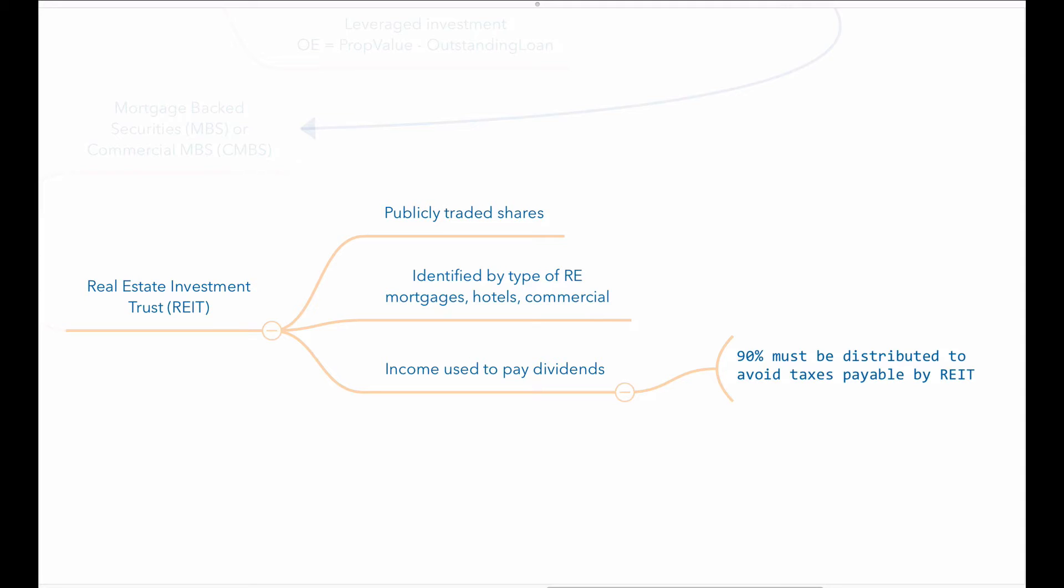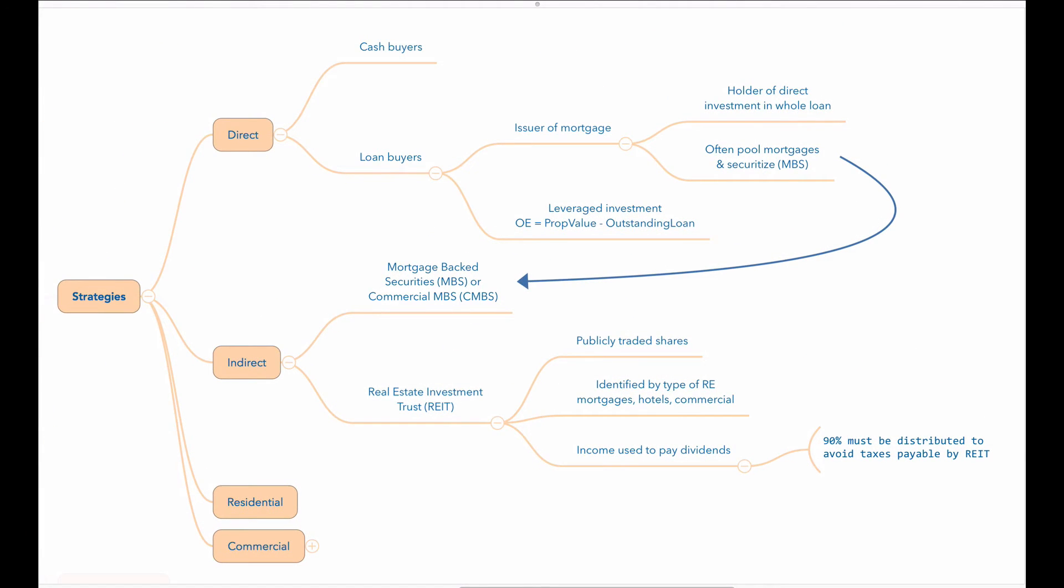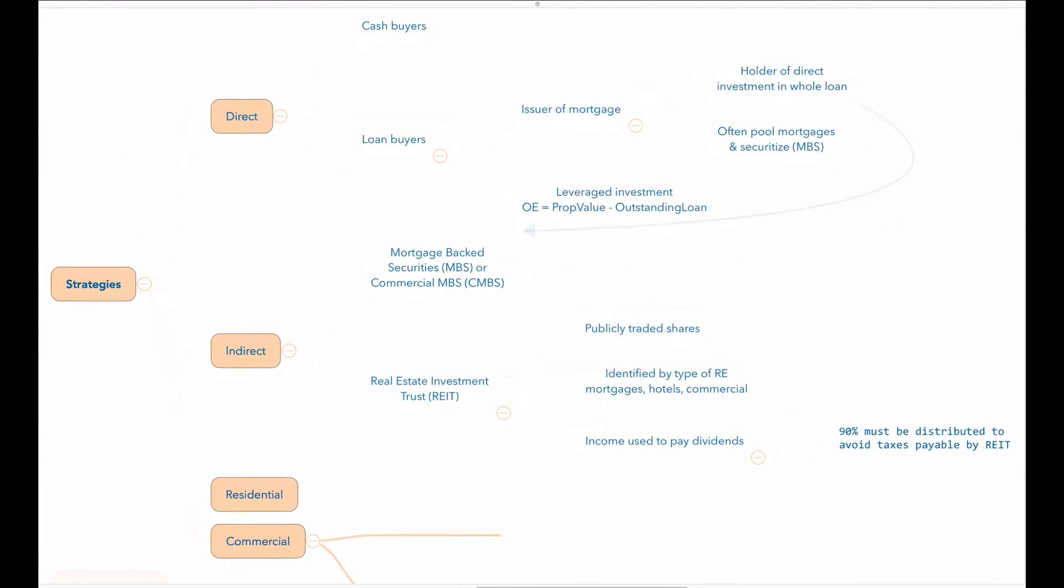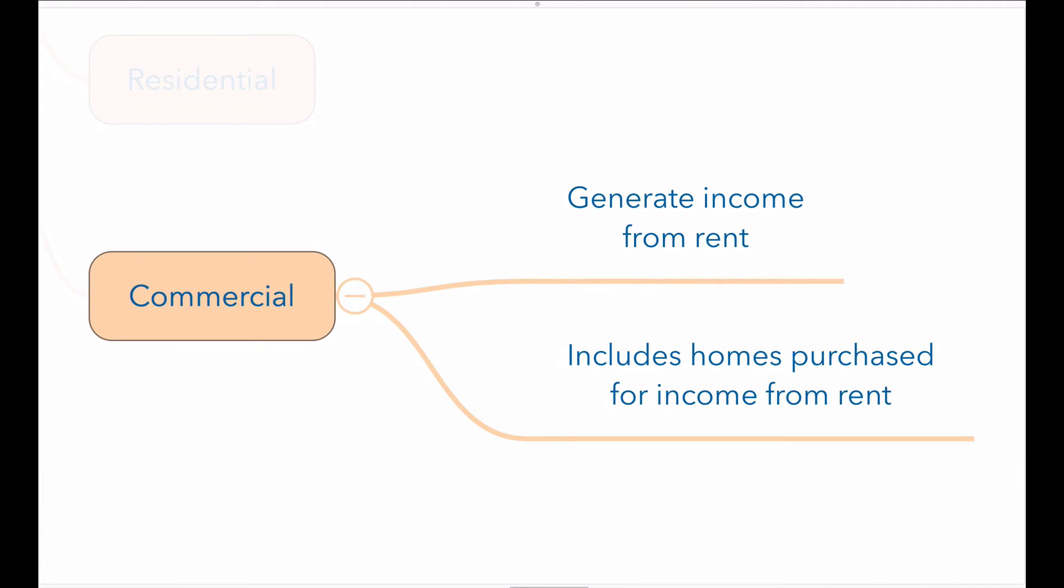The investment strategy for REITs is essentially to use the income from the investment assets to pay dividends to the investors. Typically, in order to avoid taxes on investment income, REITs must distribute 90% of that income to shareholders. Commercial real estate properties generate income from rents. Note that commercial includes homes that are purchased for the purpose of generating income from rent.